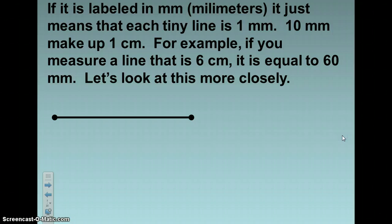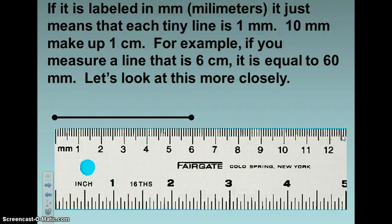If it is labeled millimeters, it just means that each tiny line is 1 millimeter. 10 millimeters make up 1 centimeter. For example, if you measure a line that is 6 centimeters, it is equal to 60 millimeters. Let's look at this more closely.